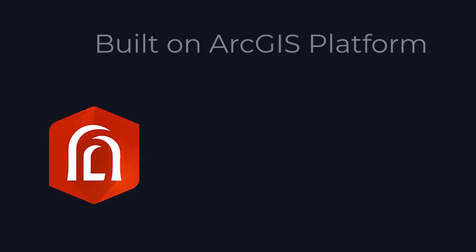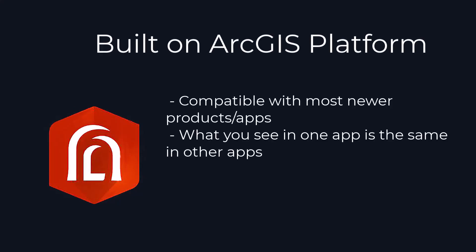Because Arcade was created by Esri, it is compatible with the newer ArcGIS product stack. This means what you see in one application is what you'll see in others. For example, if I create a label expression with Arcade inside of ArcGIS Pro and then publish that map to ArcGIS Online, the labels I see in Pro are going to be the same labels I see in ArcGIS Online, ArcGIS Enterprise, Field Maps, and so on. This wasn't always the case with things like Python.